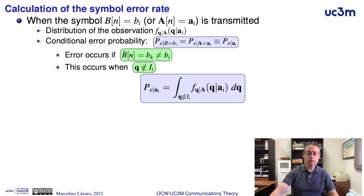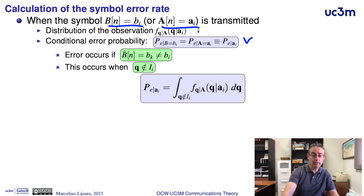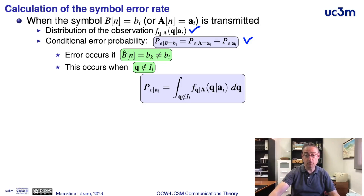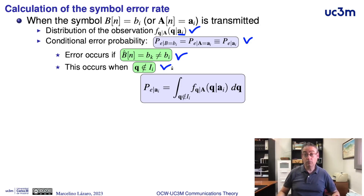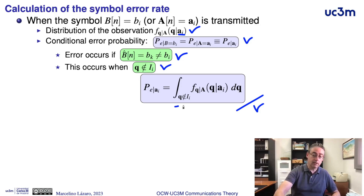This probability of error is given by the conditional probabilities of error. When we transmit a given symbol Bi, or equivalently, we transmit each vector representation Ai, we have a conditional distribution for the observation at the output of the demodulator — the conditional distribution of Q given that the transmitted symbol is Ai. It is possible to define the conditional probability of error as the probability of error when we transmit a given symbol; we will have an error when the decided symbol is different than the transmitted one. This happens when the observation, transmitting symbol Ai, is out of the decision region of that symbol. The probability of this situation can be obtained by integrating outside the decision region of the symbol of index i the conditional distribution of the observation given that symbol.